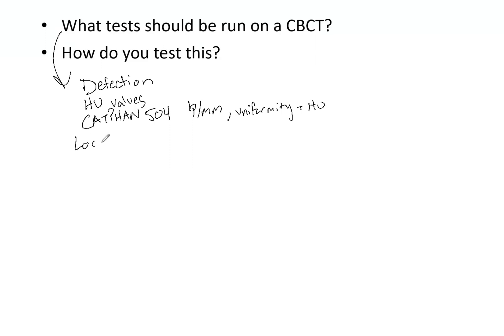You also want to check localization and geometric distortion, as this can happen on cone beam CTs. You have a baseline and know what value should be, so if you see that deviate over time, this is a way to know you need to contact your service representative and have your system worked on. And then the big one — CTDI. This needs to be done once per year, and for one scan, you need to know what dose you are delivering. This needs to stay constant throughout the life of the machine.